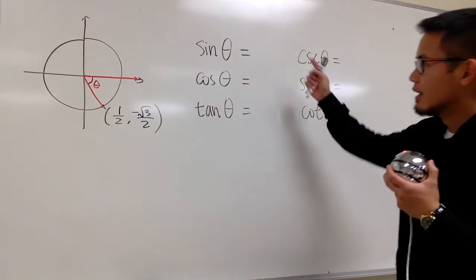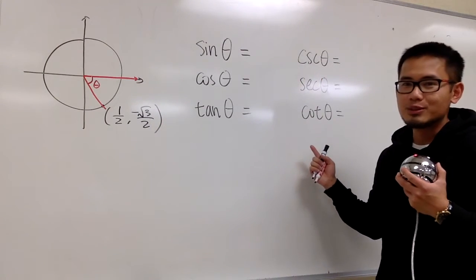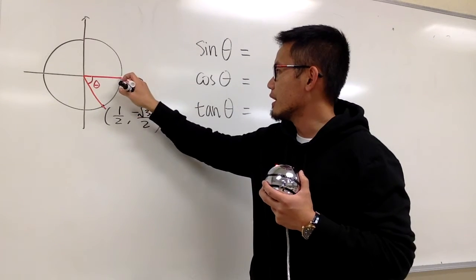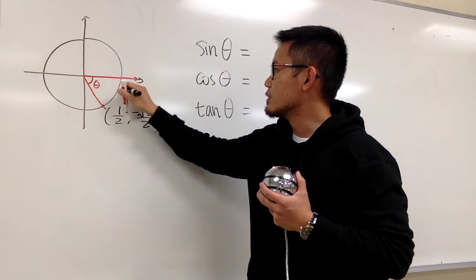We are going to figure out the exact value of all these trig functions. This is a unit circle, so the radius here is 1.